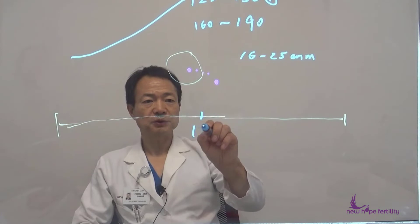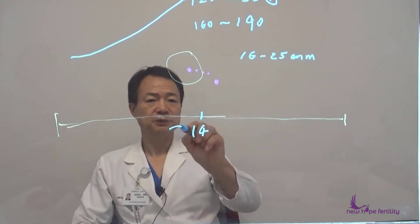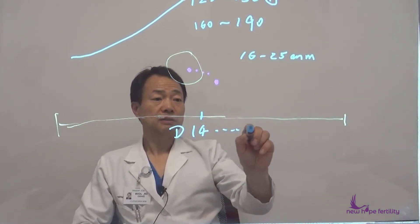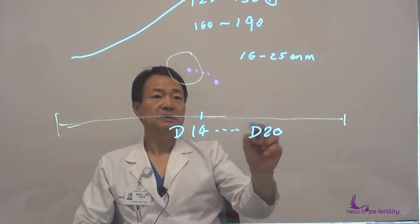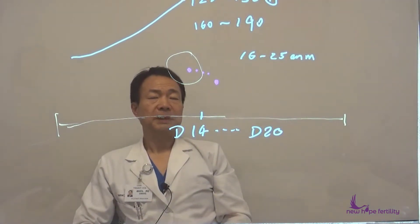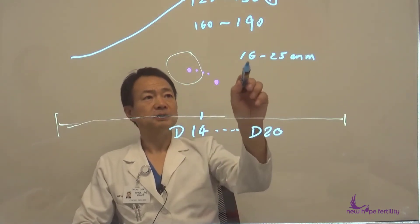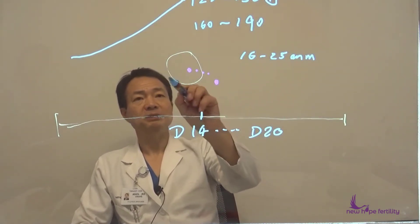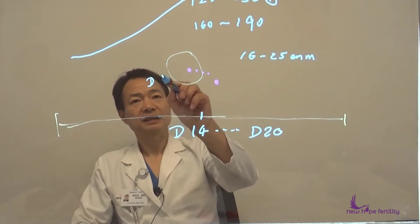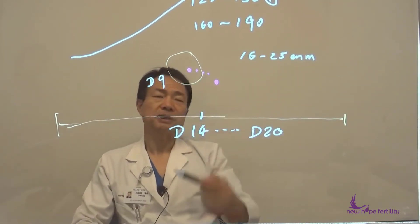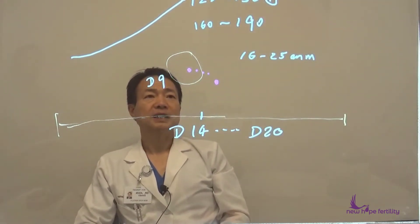Number two: if you're on day 14 of your menstrual cycle, or let's say day 20, then maybe you'll be ready even at a little bit smaller size. But if the follicle has almost reached 16 to 18 millimeters but it's only day 9 of your menstrual cycle, we may wait a little bit longer.